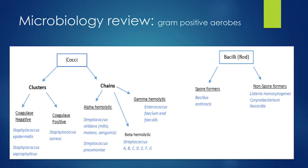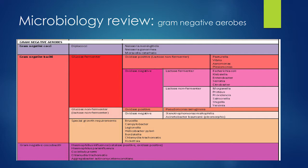Looking at gram positive bacteria: you have gram positive cocci and gram positive bacilli or rods. Common gram positive cocci in clusters include coagulase-negative staph or Staph aureus. In chains, you have alpha-hemolytic and beta-hemolytic strep, Strep pneumo, and Enterococcus. Less commonly, gram positive rods such as Listeria.